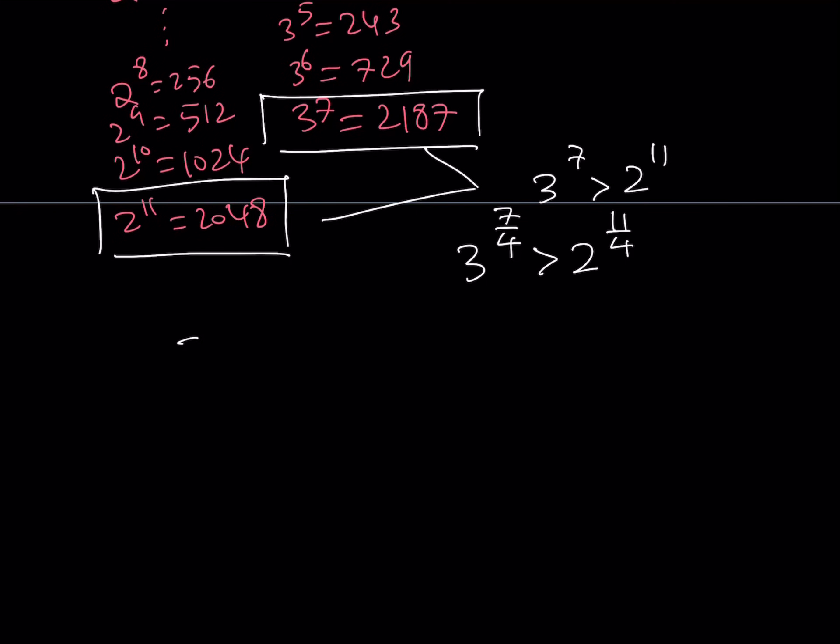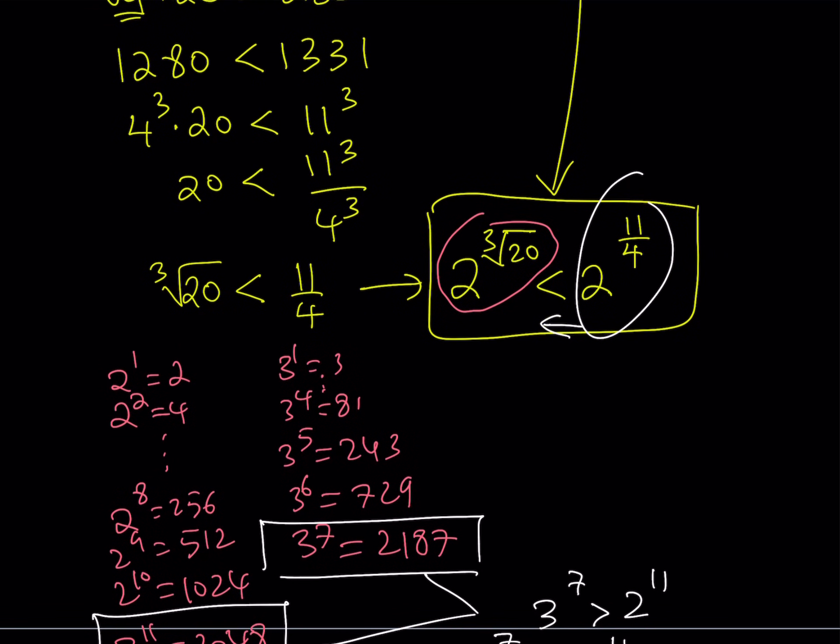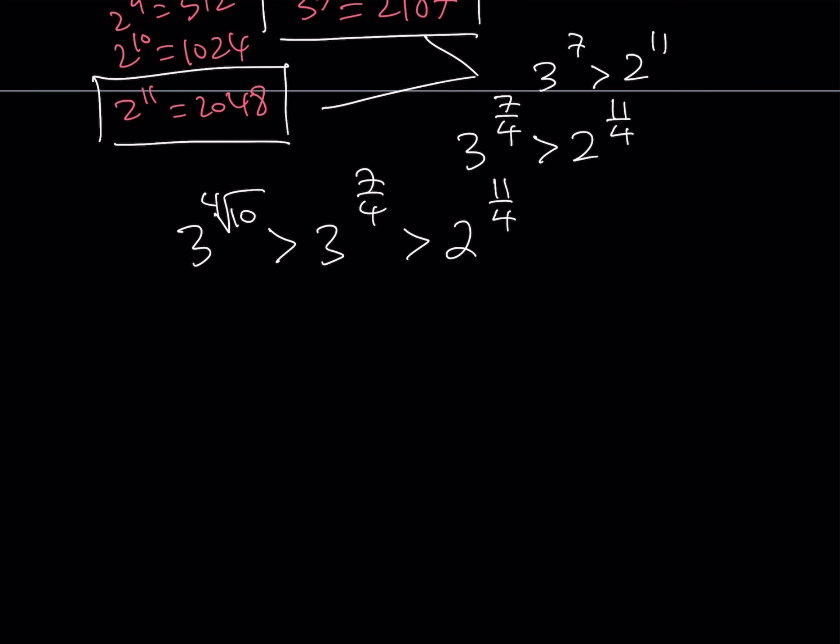Now, we can safely say that 3 to the power 4th root of 10, and we had that before, is greater than 3 to the power 7/4. And we now know that 3 to the 7/4 is greater than 2 to the power 11/4. And we know that 2 to the power 11/4 is greater than 2 to the power cube root of 20. And using the transitive property, this gives us that 3 to the power fourth root of 10 is greater than 2 to the power cube root of 20.